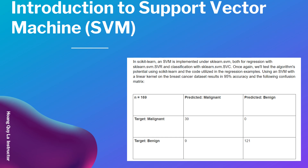Using an SVM with a linear kernel on the breast cancer dataset results in 95% accuracy. Looking at the confusion matrix, the predicted malignant and target malignant count is 39, with zero misclassifications there. There were some incorrectly predicted malignant cases in the benign target group; however, 121 were correctly predicted, showing the SVM performs very well on this classification task.